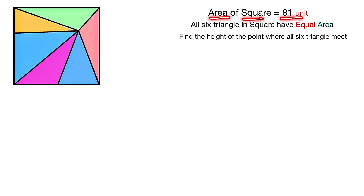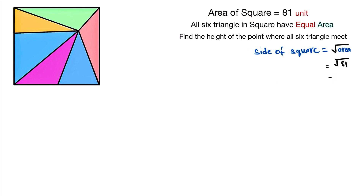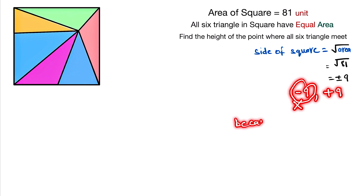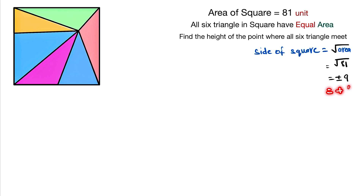First, the area of the square is given as 81, so we find the value of the side of the square. The side is given by the square root of the area, so we compute the square root of 81, which equals plus or minus 9. We can't take minus 9 because length can't be negative, so the side of the square is 9.